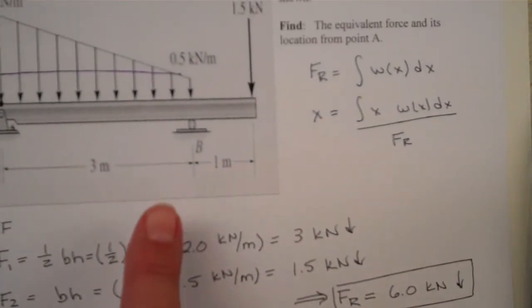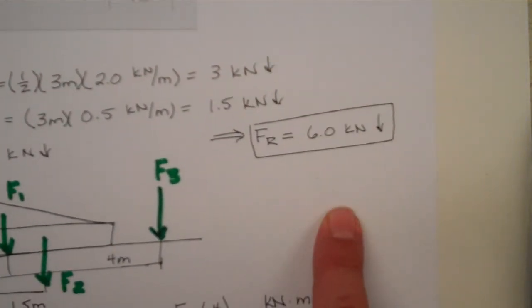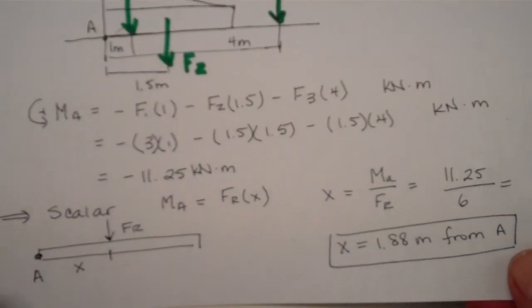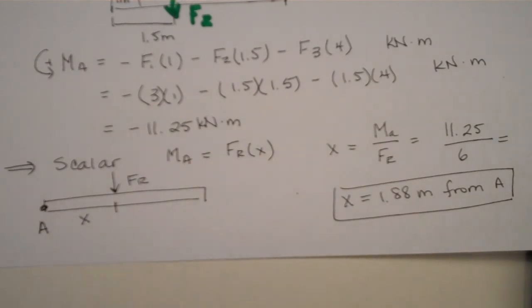So, we've taken this system of forces, reduced it down to one resultant force, and we're asked where that one resultant force would need to act to give us the same moment. That resultant force would need to act 1.88 meters from point A, and we've now answered our question. So, for simple geometric shapes, we can do triangles, rectangles, find the net force, and then use a moment to determine where that net force would act.